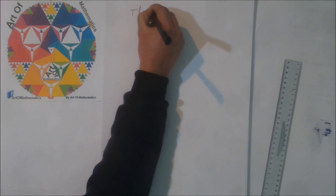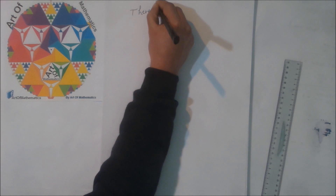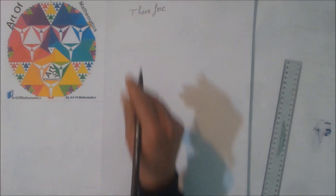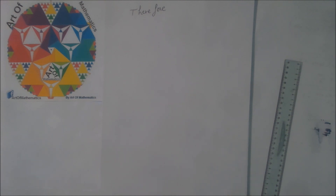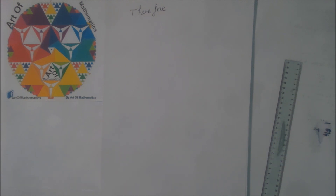Therefore, the more rectangles we get, the area of all the rectangles when N tends to infinity gets closer to the area under the curve of the function f between x equal to A and x equal to B, which is equal to the integral from A to B of the function f, since the area is defined by an integral.